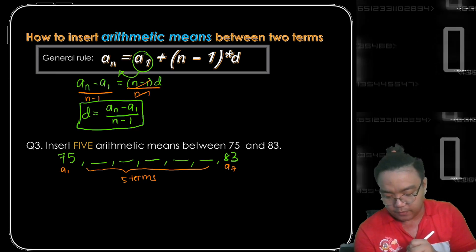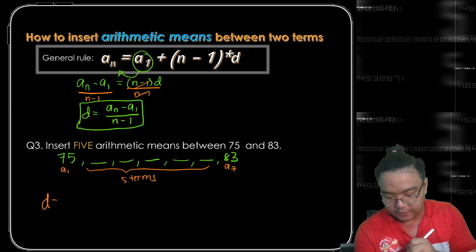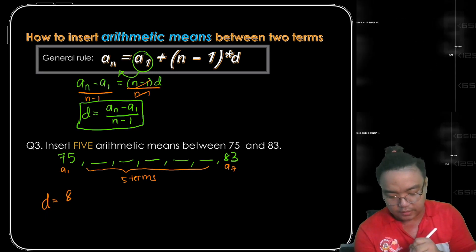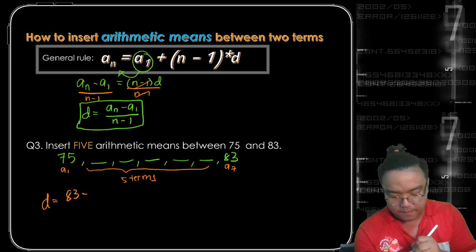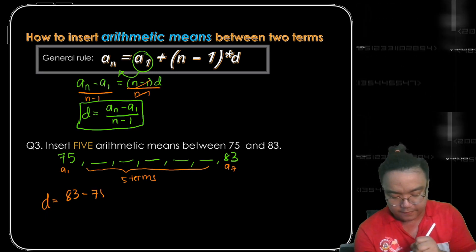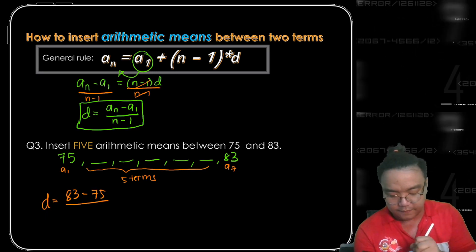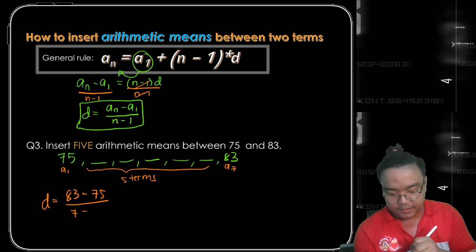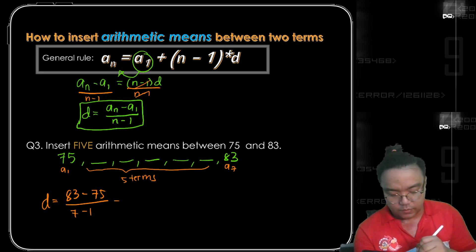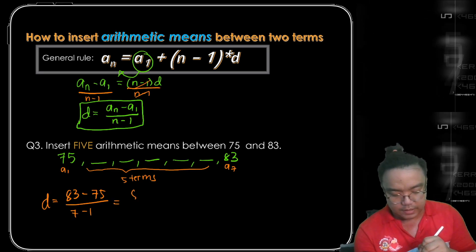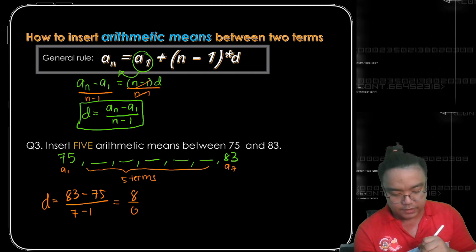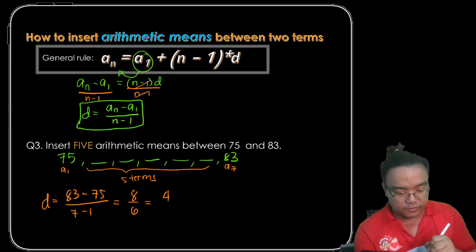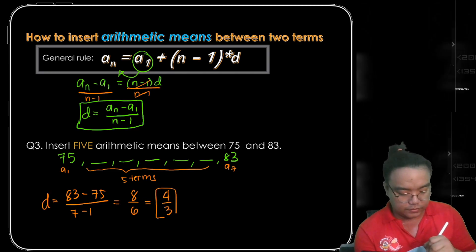Applying the formula, the common difference is obtained by 83 minus 75 divided by 7 minus 1, which gives 8 over 6. In lowest terms, we have 4 thirds as our common difference.